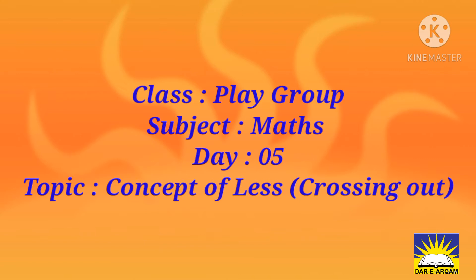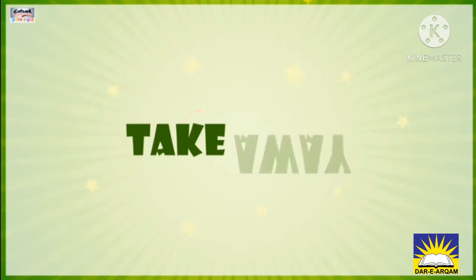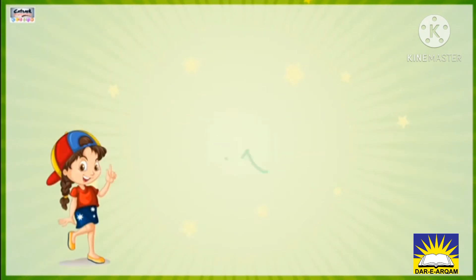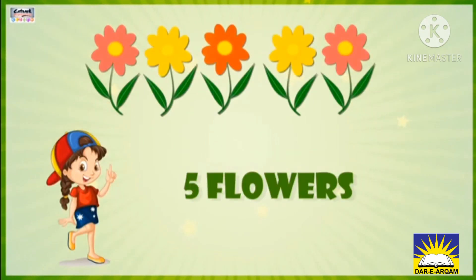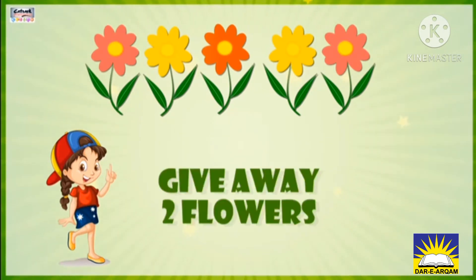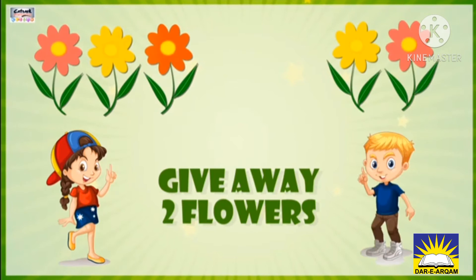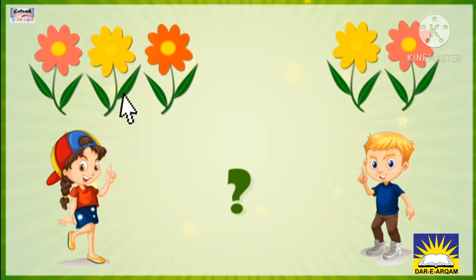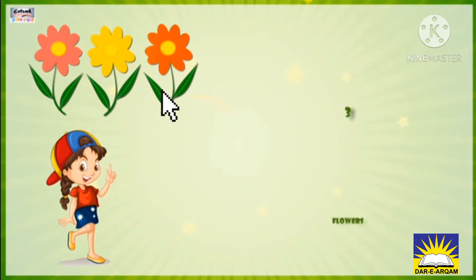Crossing out means take away. Look here — there is a girl, she has five flowers. If she gave away two flowers to her brother, so how many are left? Let's count: one, two, three — three flowers left.